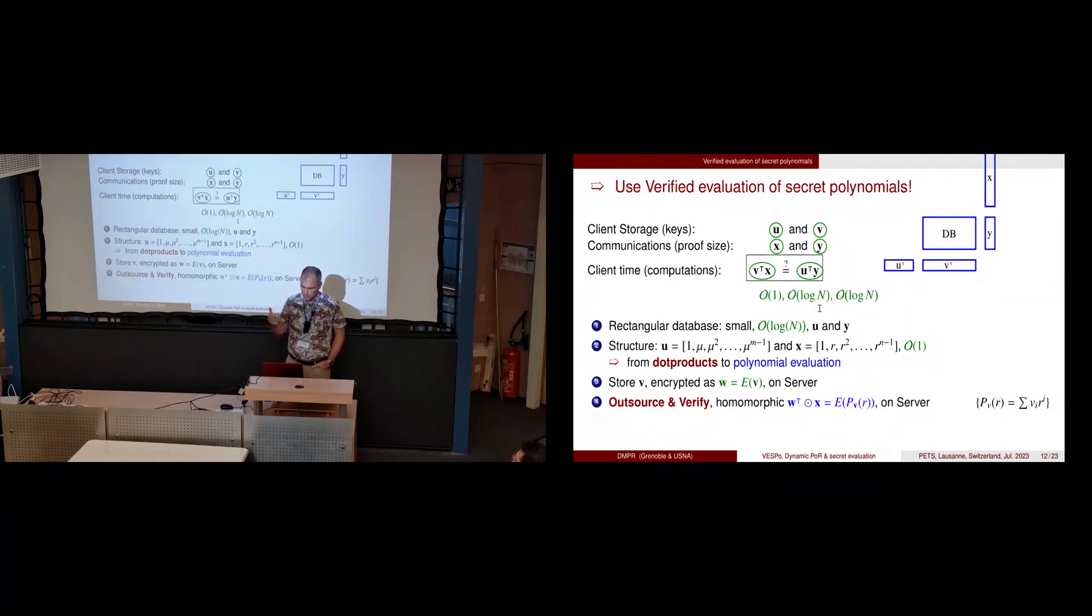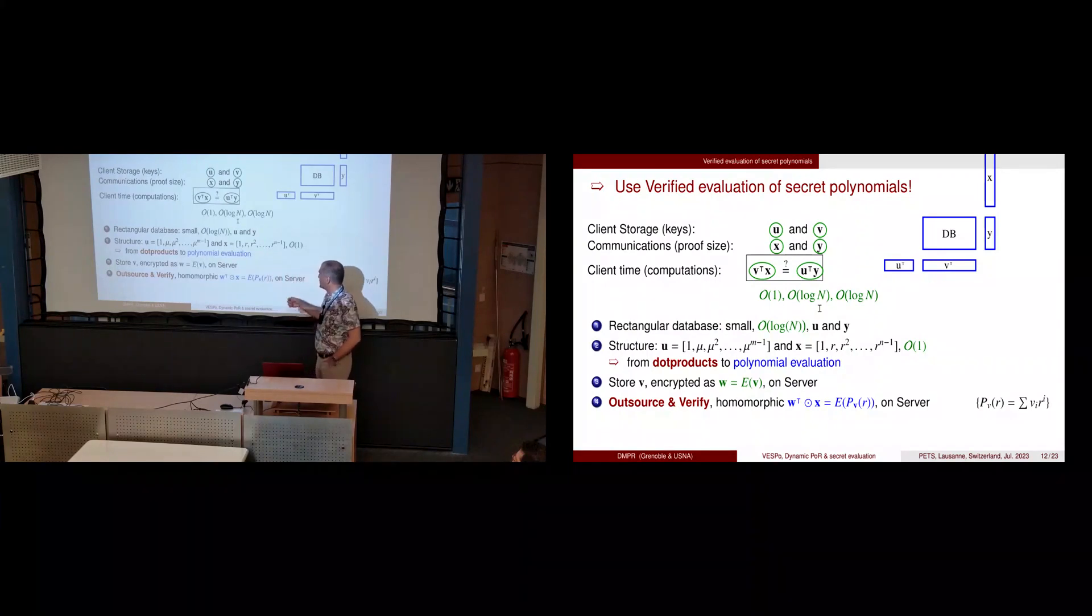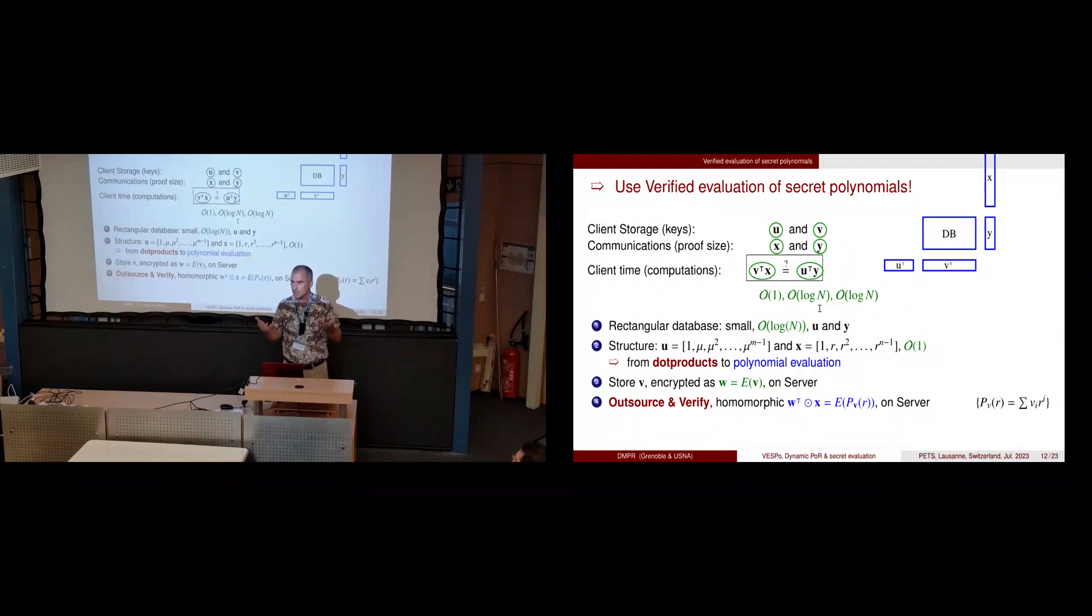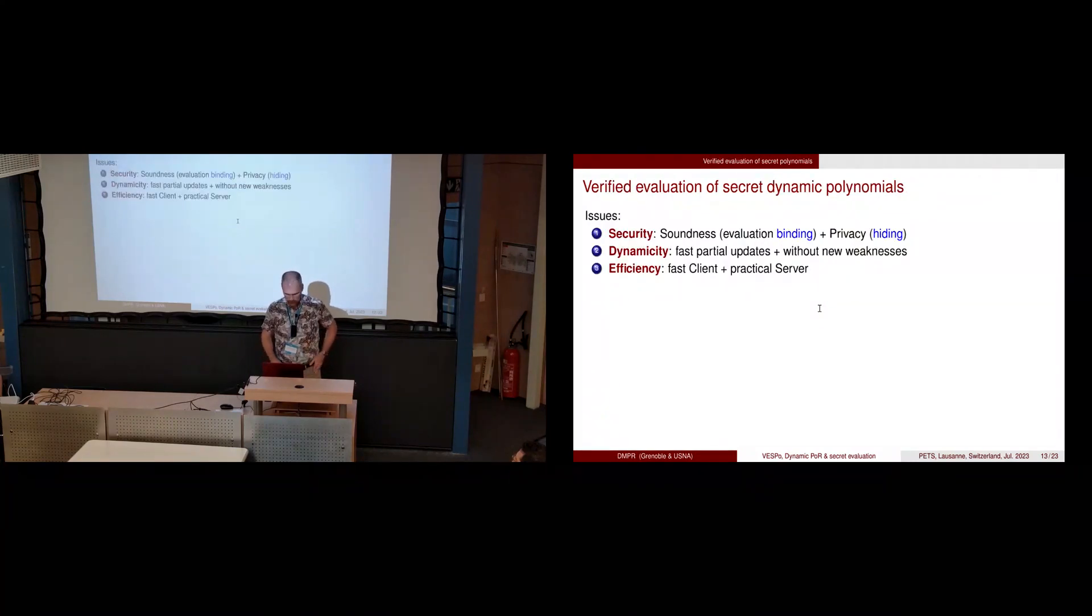We need two things: first, to efficiently evaluate it as an encrypted thing, so we need homomorphic encryption—linearly homomorphic encryption for this. Second, we want to check that the value is correct, so we need a certificate to prove that the evaluation is the one we need so we can check that the data is still there and unmodified. We need security so the certificate binds the value to the correct evaluation, and we need privacy so the coefficient of the polynomial v is not revealed.